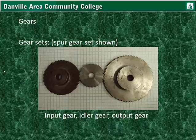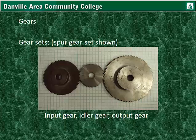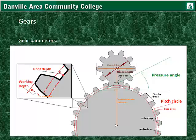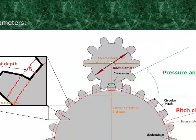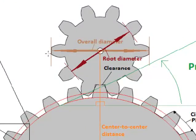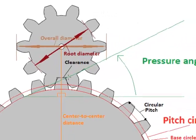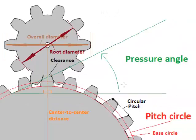Gear sets. Here is the input gear, the idler gear, and the output gear. The idler gear does not affect the overall ratio — it just acts as an idler in between, so the input gear turns the idler and the output gear will turn in the same direction as the input gear. That is the purpose of the idler. The angle that the force comes into contact with the second gear is called the pressure angle.